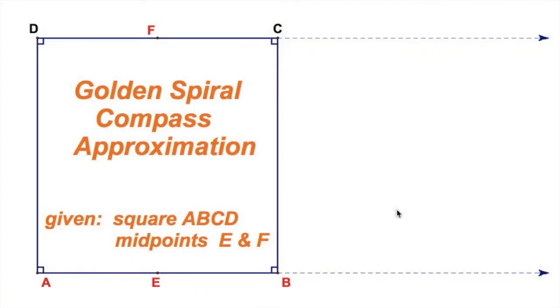And welcome to 90 Notes. Let's get to our golden spiral compass construction. It's actually an approximation, but we're starting here with A, B, C, D, the square, and the two midpoints, E and F. That's your starting point.